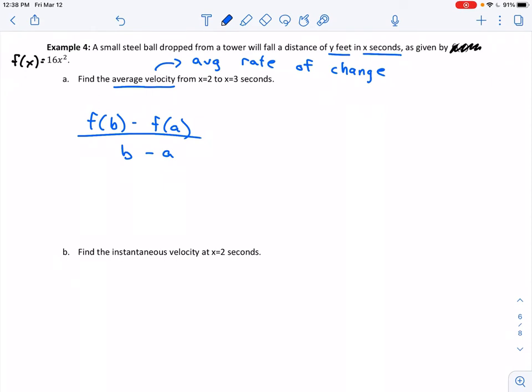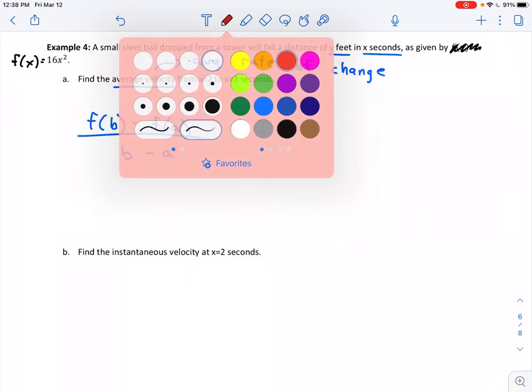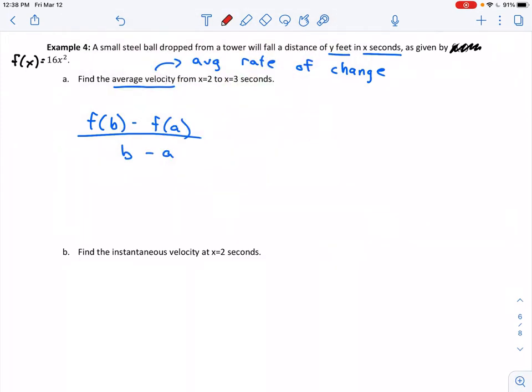I'm going to take x=2 and x=3 and plug them into this formula. Let me find f(2) and f(3) first. For f(2), I'm plugging that into my function 16x². So I have 16 times 2 squared, which is 16 times 4, giving me 64. For x=3, f(3) equals 16 times 3 squared, which is 16 times 9, giving me 144.